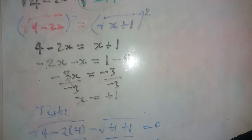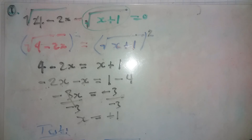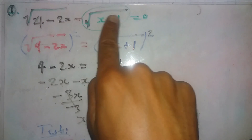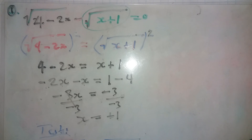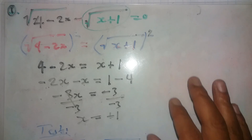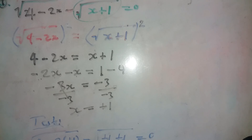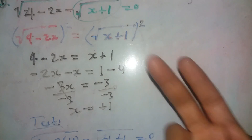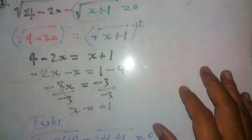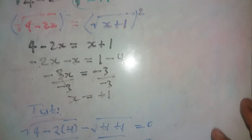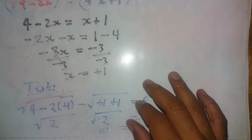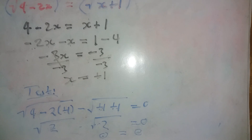So that's how you solve surd equations. To recap: isolate the square root, then square both sides to eliminate it — or for a cube root, cube both sides, and for a fourth root, raise both sides to the fourth power. The resulting equation may be linear or quadratic; solve accordingly, and always check your solution by substituting back into the original equation. Thanks for watching — bye bye, stay tuned for more.